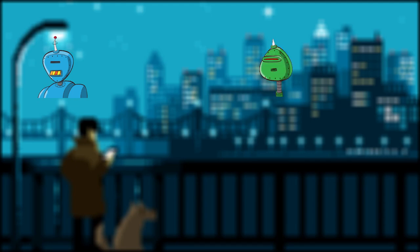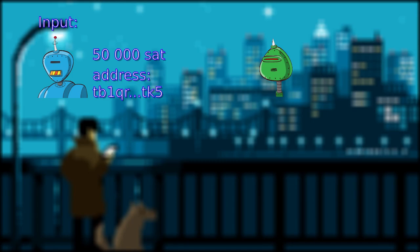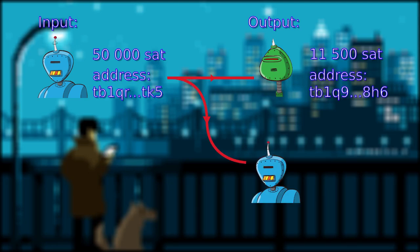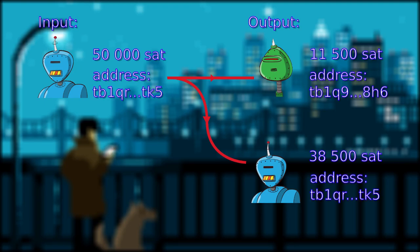If we go back to the example where Bitcoin Q&A were paying me, instead of sending me 50k sat, he noticed I was only charging 11.5k satoshi. So on the output, he will send me 11.5k satoshi.